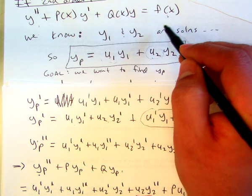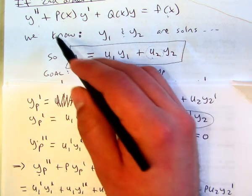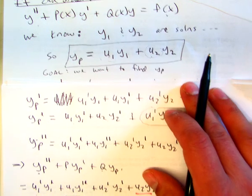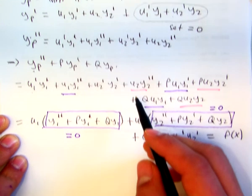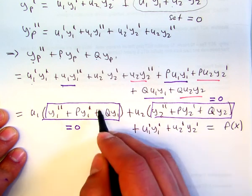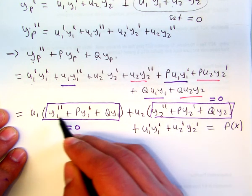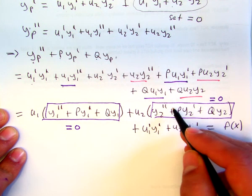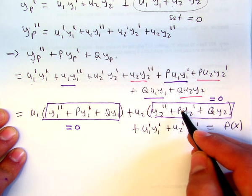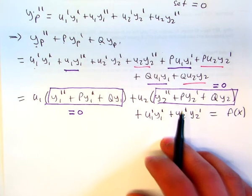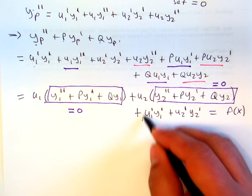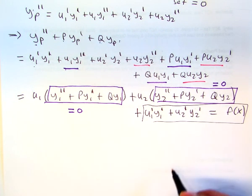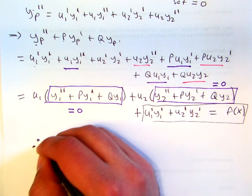So anytime you plugged in y1, the differential equation becomes 0. Anytime you plug in y2, the differential equation becomes 0. And this is exactly what this looks like. This looks like we plugged in y1 into the left-hand side of the equation, so that's going to equal 0. And this looks like we plugged in y2, so that's going to equal 0. So then that leaves us with this.